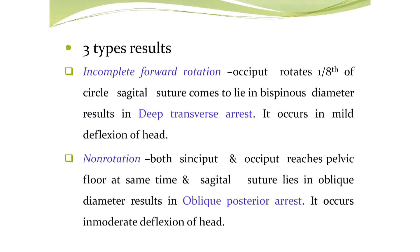In occipital posterior position we can expect three types of result. The first is incomplete forward rotation: the occiput rotates one-eighth of the circle, the sagittal suture comes to lie in the bi-spinous diameter, resulting in deep transverse arrest — this occurs in mild deflection of the head. The second is non-rotation: both sinciput and occiput reach the pelvic floor at the same time, the sagittal suture lies in the oblique diameter, resulting in oblique posterior arrest.